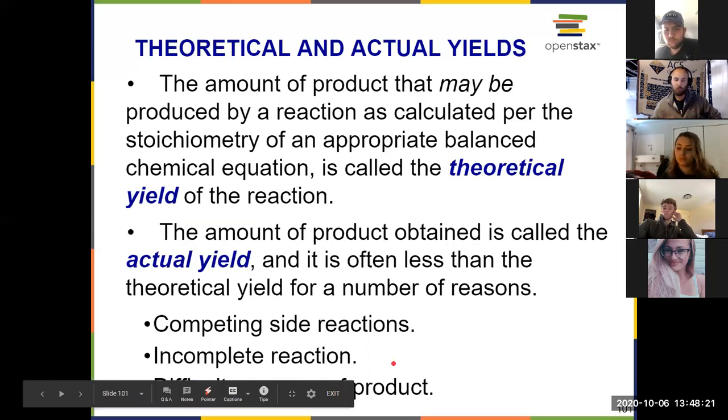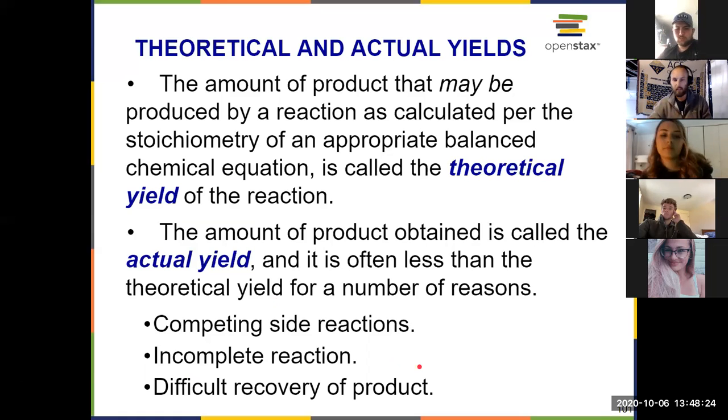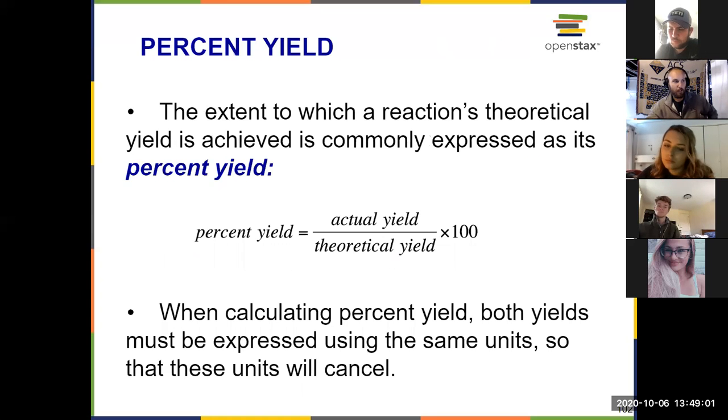You might lose a little bit of your product when you're trying to isolate it. There might have been a competing side reaction. You will also run into situations throughout your chemistry courses where you'll get an actual yield that's higher than the theoretical yield, which doesn't seem like it makes sense without violating the law of conservation of matter. But that's because products are typically wet. If you don't fully dry a product and you have water molecules still floating in there, it adds extra mass. So you could get an actual yield higher than the theoretical yield. It's just not common. That being said, if you calculate a percent yield of, you know, 400,000%, then chances are your math's wrong somewhere.